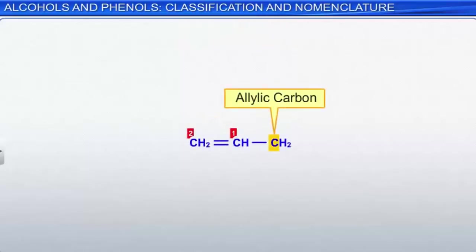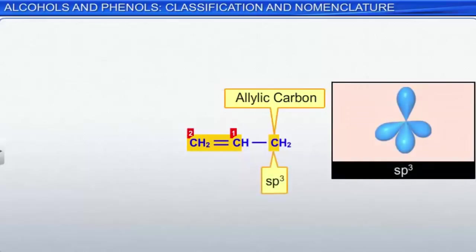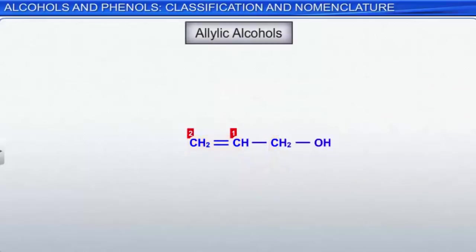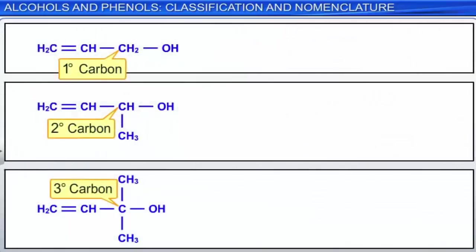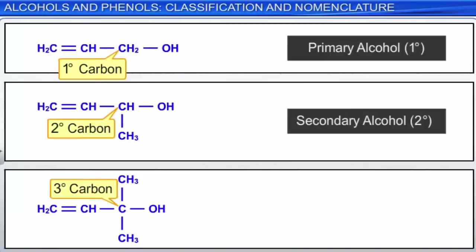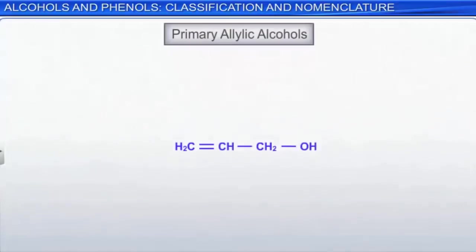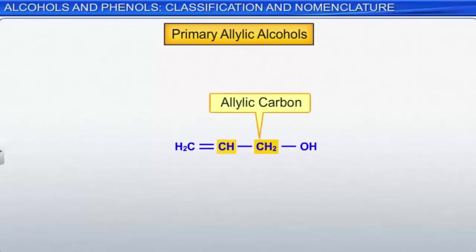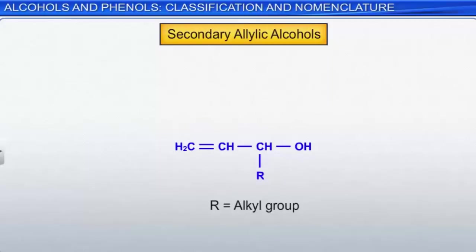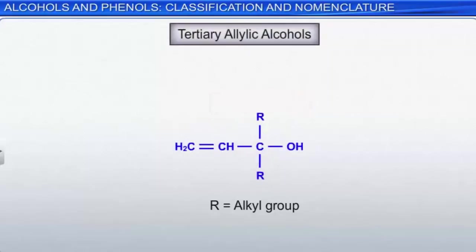An allylic carbon is a carbon atom bonded to a carbon-carbon double bond; note that the allylic carbon is sp3 hybridized. An allylic alcohol has a hydroxyl group attached to an allylic carbon. Allylic alcohols can also be characterized as primary, secondary, or tertiary. A primary allylic alcohol has one other carbon group attached to the allylic carbon; secondary allylic alcohols have two; and tertiary allylic alcohols have three.